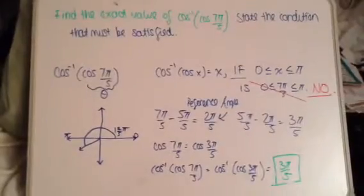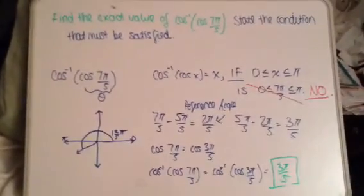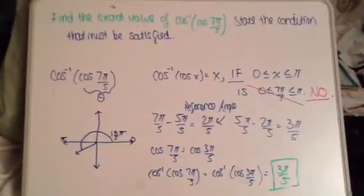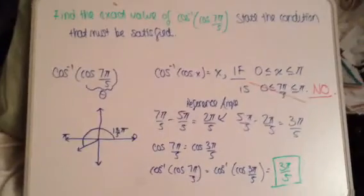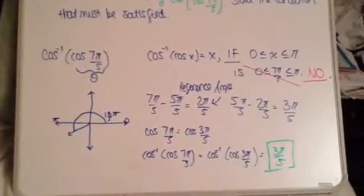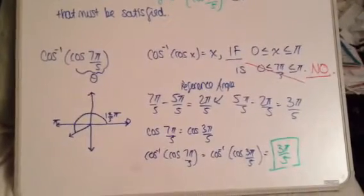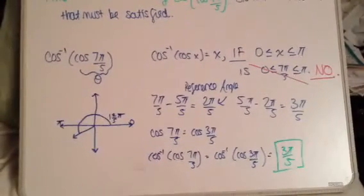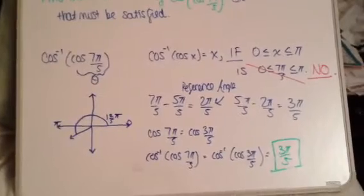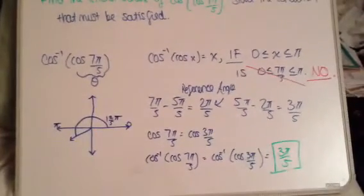The problem is asking for the exact value of inverse cosine of cosine 7π/5, and it asks to state the condition that must be satisfied. In order for inverse cosine to equal cosine of x, x has to be between 0 and π inclusive.